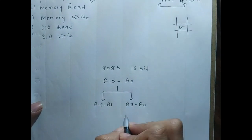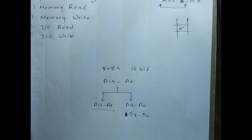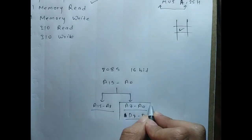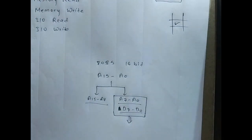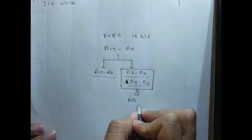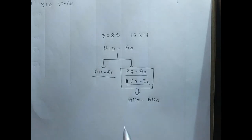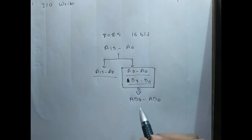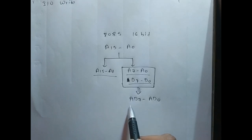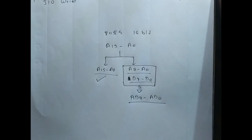8085 also has a data bus from D7 to D0. The A15 to A8 bus carries the higher order memory address, A7 to A0 carries the lower order memory address, and D7 to D0 carries data. The lower address bus and data bus are multiplexed together to give a multiplexed bus AD7 to AD0. This bus carries both data and address — we can send address first and later send data, using this bus as both a data bus and address bus in a multiplexed way. The A15 to A8 bus will always carry the address.